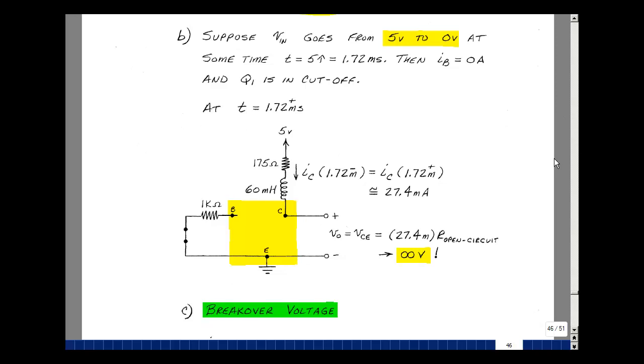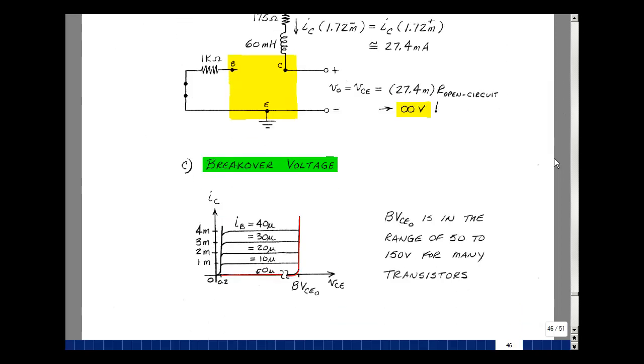But what happens with the transistor when the voltage across it starts to take off? Let's take a look at what's called the breakover voltage. The bipolar transistor has a rating that if you eventually increase the collector emitter voltage high enough, things will start to conduct again. This would look like a battery now of a value of BV sub CEO. The value of this depends on the transistor, but you can expect something between 50 and 150 volts.